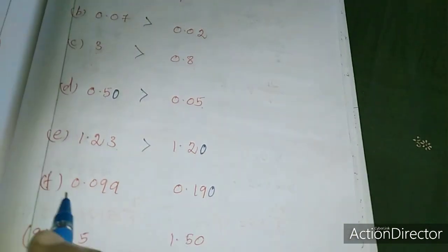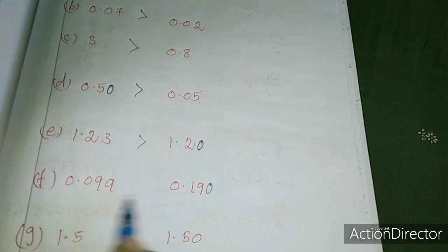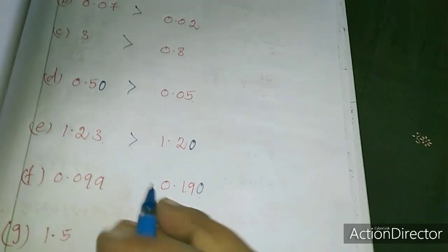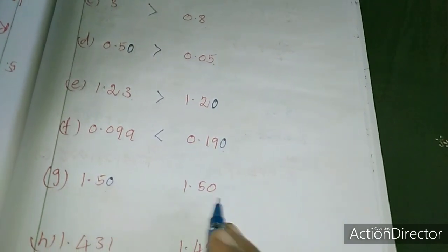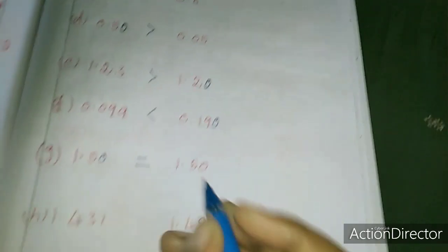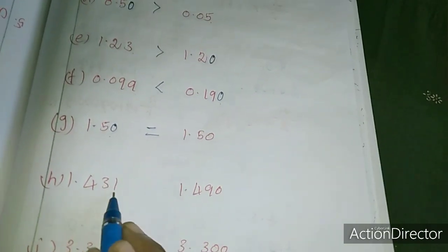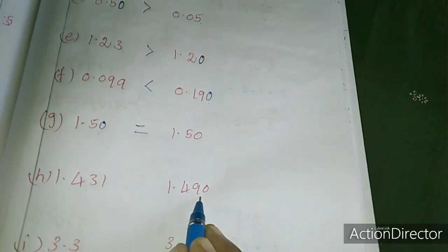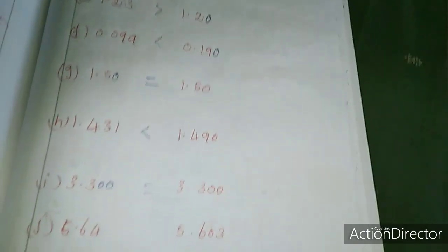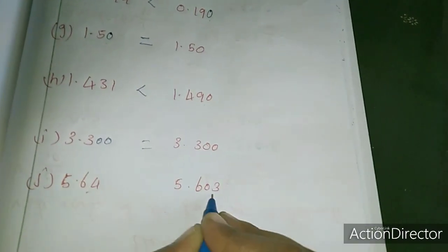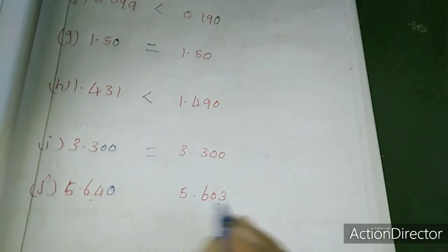0.099 and 0.190. Which is greater? This is greater. Here also I joined zero, so 1.50 and 1.5 are equal. Here 1.431 and 1.490, so this is greatest. For balancing I am joining two zeros, so both are equal. Here 2, here 3, so I am adding zero. This is greatest.